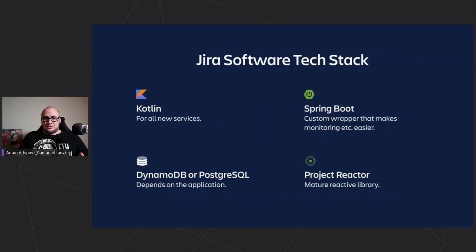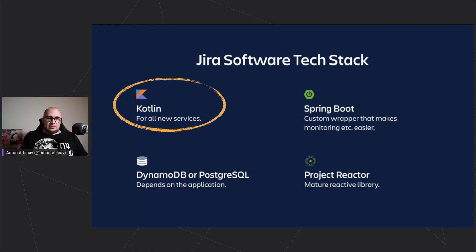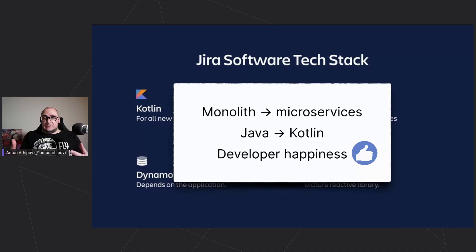The technology stack looks pretty common: Spring Boot framework with Kotlin, using Project Reactor for asynchronous communication. Their journey was to take the huge Java Jira monolith and start decomposing it to run in the cloud for scalability. They started developing new services and decided they needed an updated technology stack to make teams happier — developers wanted to work with modern tools, frameworks, and programming languages. They moved from monolith to microservices, and from Java to Kotlin.